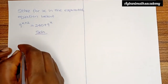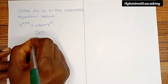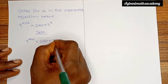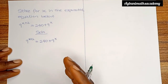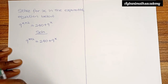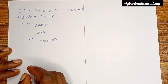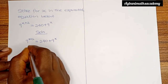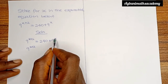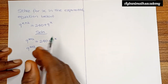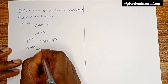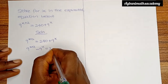Let's write down the equation again: 9 raised to the power x plus 2 is equal to 240 plus 9x. What we are going to do first is to move 9 raised to the power x to the left side so that all the values containing x will be on one side of the equation. This means we have 9 raised to the power x plus 2 minus 9 raised to the power x is equal to 240.